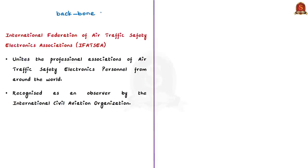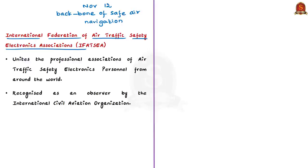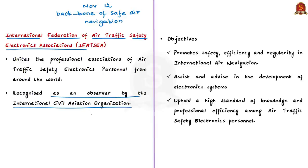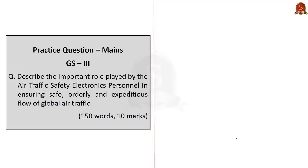Today, November 12, is remembered as International Air Traffic Safety Electronics Personnel Day. The International Federation of Air Traffic Safety Electronics Associations unites professional associations of these personnel from around the world and is recognized as an observer by the International Civil Aviation Organization, a specialized agency of the United Nations. The federation promotes safety, efficiency and regularity in international air navigation, assists in the development of electronic systems for safe air traffic flow, and upholds high standards of knowledge and professional efficiency among these personnel.